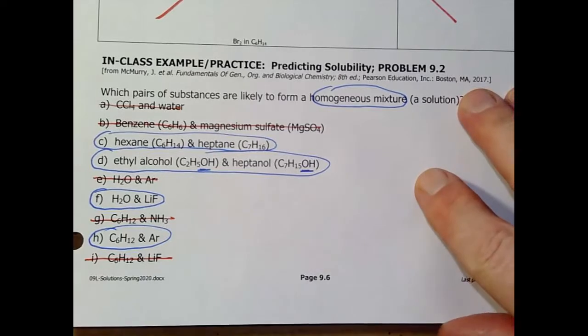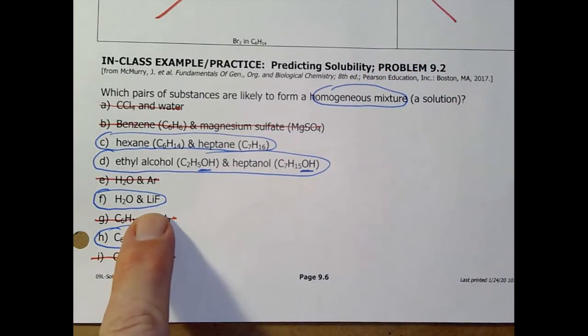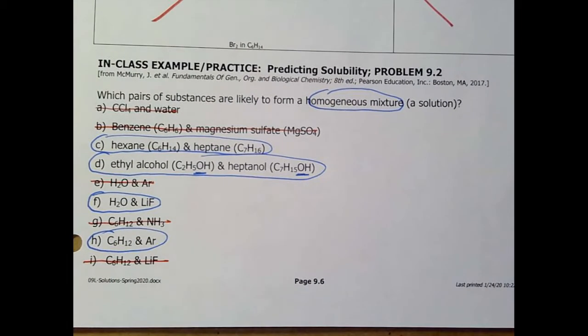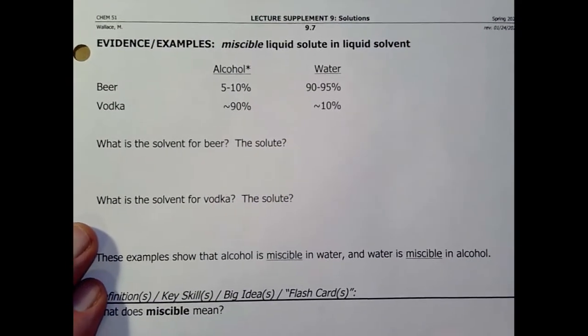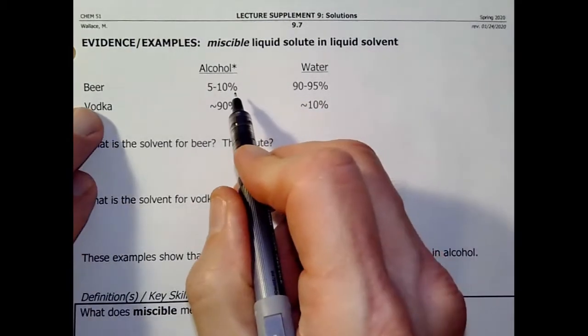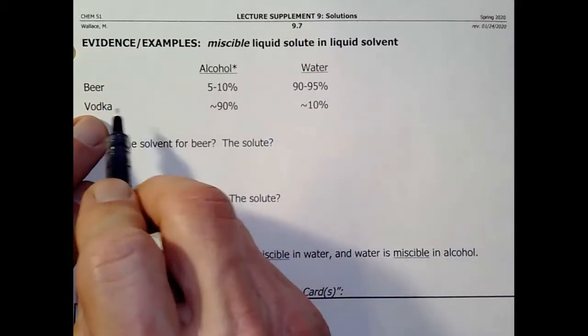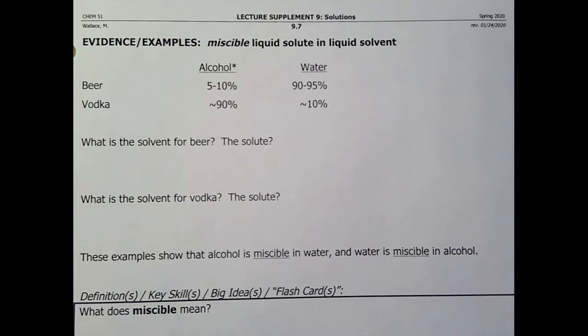All right. So that gives us a way to make predictions. Before, we can fine-tune the water solubility of the ionic compounds using our solubility rules. But now we can make some pretty good guesses about everything else. Now, here's kind of an interesting term. Here I've got beer, mostly water, a little alcohol. Vodka, mostly alcohol, a little bit of water. So maybe stop the video and say, well, for beer, what's the solvent and the solute? For vodka, what's the solvent? What's the solute? Stop the video. Think about that.